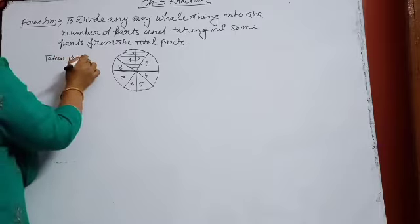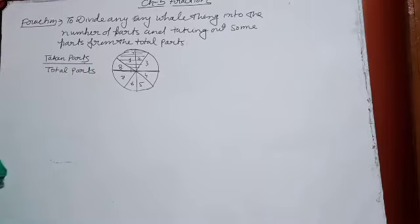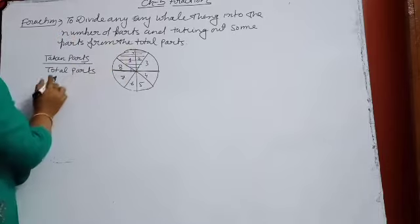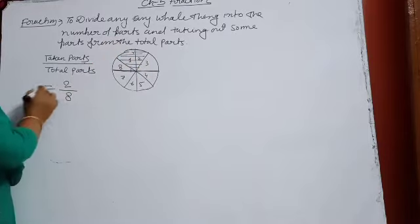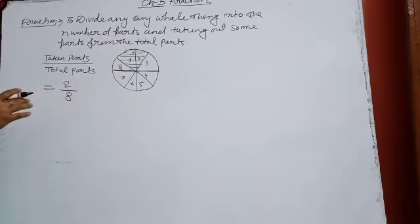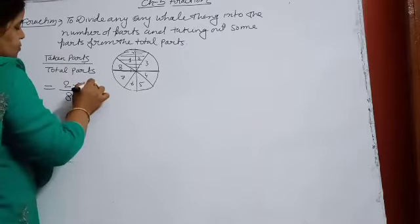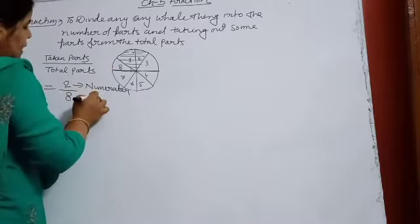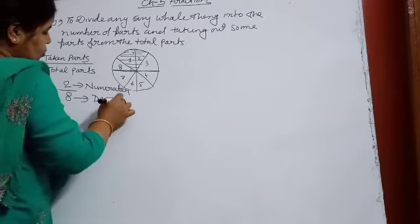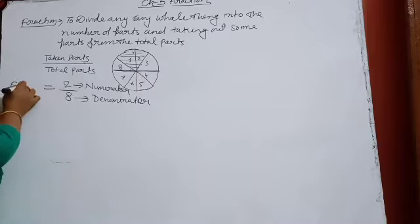Taken parts upon total parts. How many parts have I taken out? 2 parts. How many parts have I divided the whole circle into? 8. That's why this fraction will become 2 upon 8. Taken parts always become the numerator, and total parts is known as the denominator. The whole process is known as the fraction.